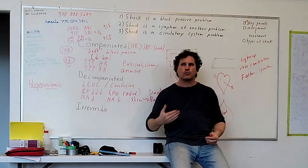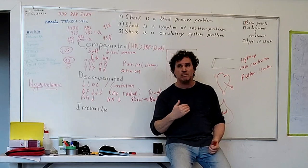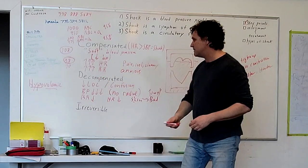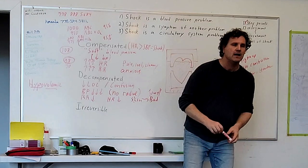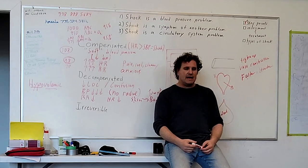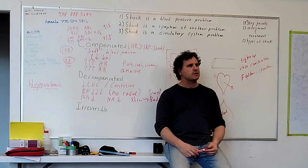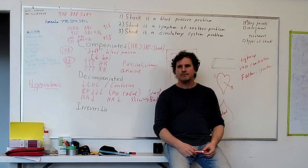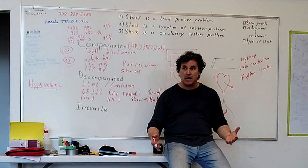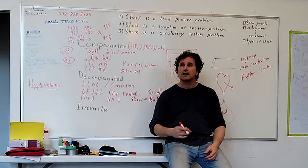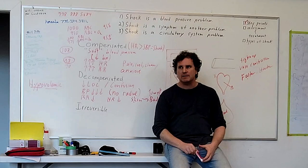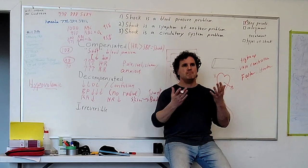The next phase — irreversible shock — is not something we can track, but it's good to know about. With decompensated shock progressing to this phase, the organs begin to fail, typically starting with the kidneys. Once someone reaches this phase, it doesn't matter if you get them to the best trauma bay in the country — this person is going to die. You've passed the point of no return. So with someone in decompensated shock, your job is to waste no time and make them somebody else's problem.